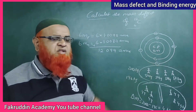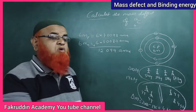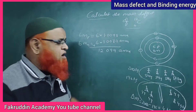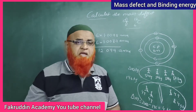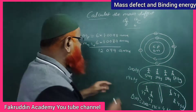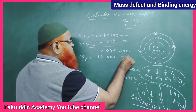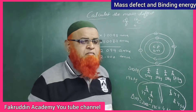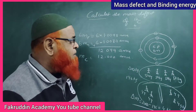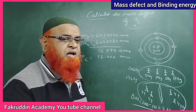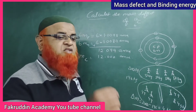Inside the nucleus there are 6 protons and 6 neutrons. If you take the protons and neutrons separately outside the nucleus and add their weights, you get 12.099 atomic mass units. But shockingly, the measured mass of the carbon atom is only 12 atomic mass units. The carbon atom has 6 protons and 6 neutrons, so it should have a mass of 12.099 — but why has the mass been reduced?